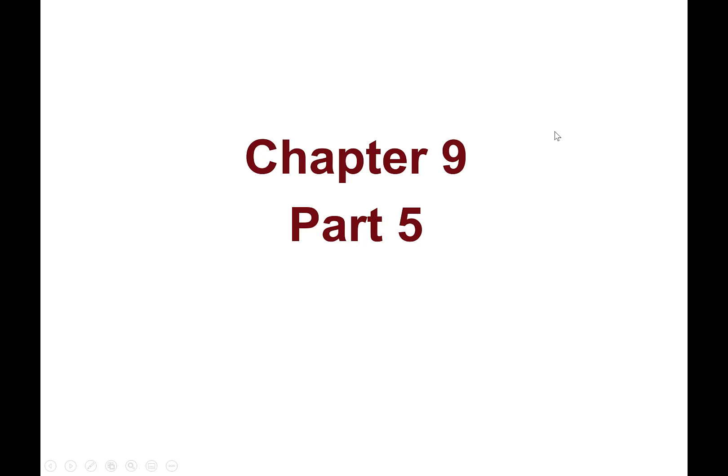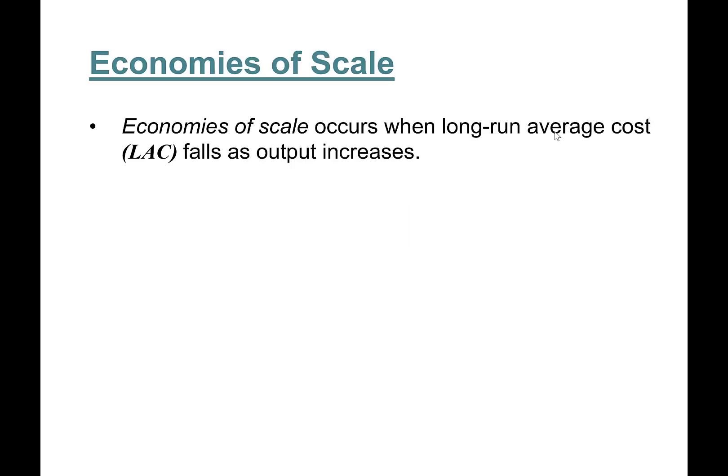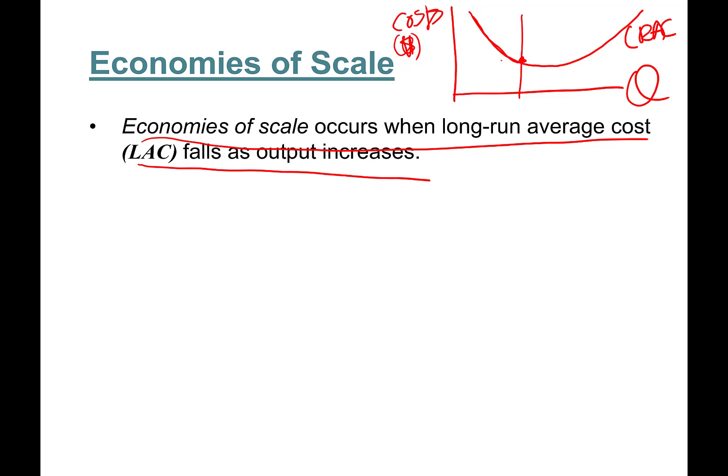Hello everyone, this is Chapter 9 Part 5. In this part we'll learn about economies of scale and constant returns to scale. Economies of scale occurs when the long-run average cost curve falls as output increases. We have quantity here, we have costs. So the long-run average cost curve looks like this. This is the region where our long-run average cost curve is decreasing. So this is the region of economies of scale.